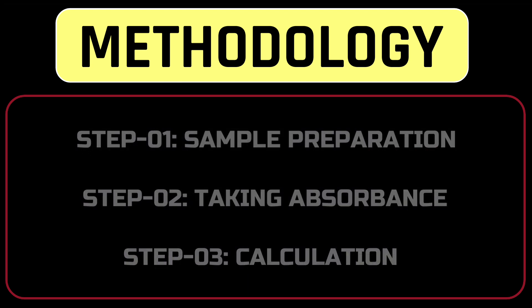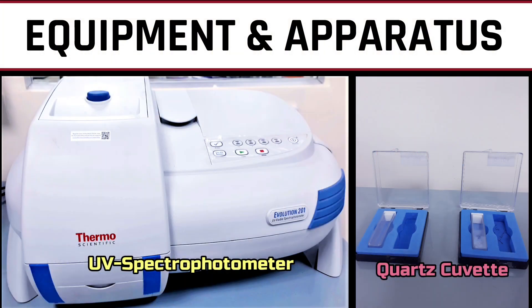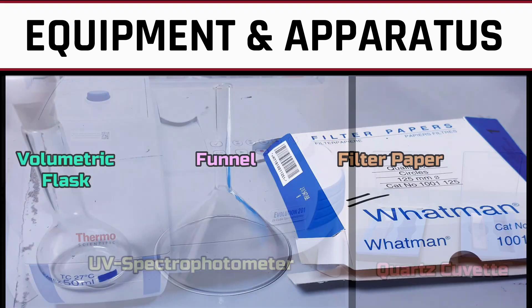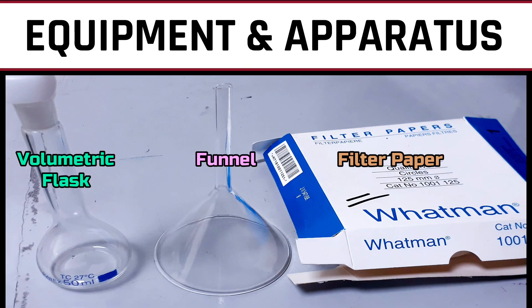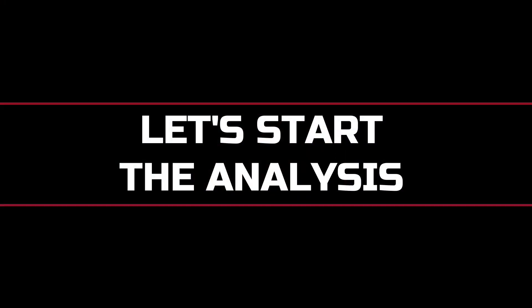To conduct the experiment we need a balance, vortex mixer, UV spectrophotometer, quartz cuvette, volumetric flask, funnel, Whatman filter paper, and n-heptane. Let's start the analysis.